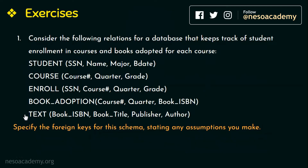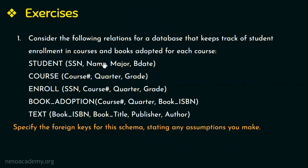Let us see each of the relational schemas. The first is the student relation with SSN (social security number), name, major, and birth date as its attributes. SSN is the primary key as each of its values are unique and helps us identify each student uniquely. The next relation is course with course number, quarter, and grade as its attributes, where course number is the primary key.